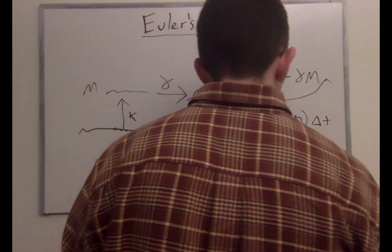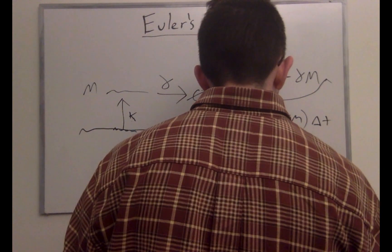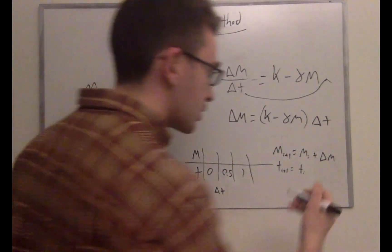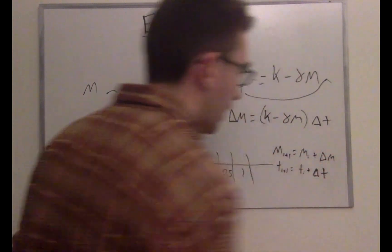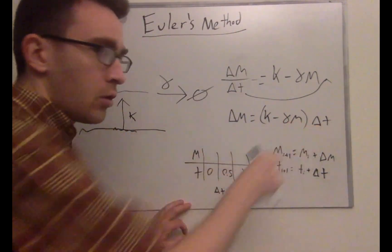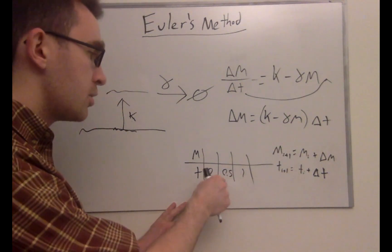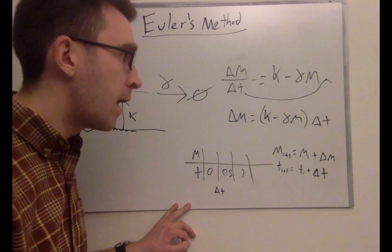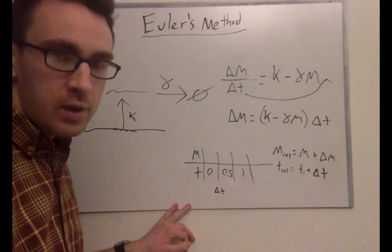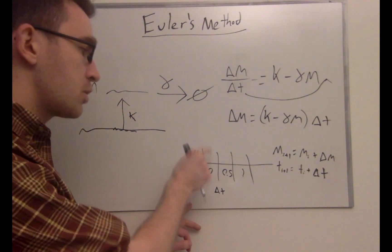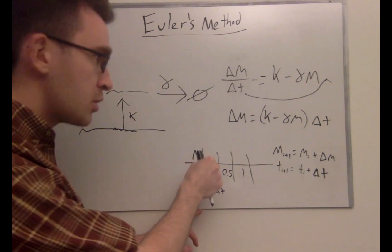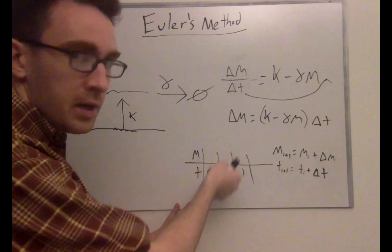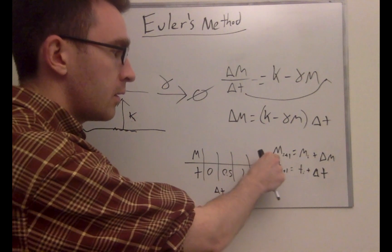We do the same thing for T: T at iteration i+1 equals T[i] plus delta T. In the actual Python code, delta T is something we define — I made it 0.5 here, but you can make it whatever you want. K and gamma are constant parameters we define. The only thing we really calculate is M: we have some starting value for M, then for each iteration we calculate delta M and update to the next value.